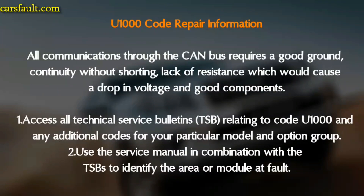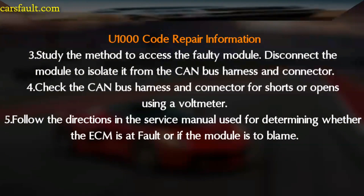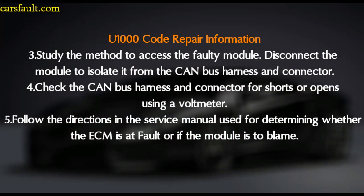Third, study the method to access the faulty module, disconnect the module associated from the CAN bus harness and connector. Fourth, check the CAN bus harness and connector for shorts or opens using a voltmeter — you can buy a voltmeter from Amazon, link in the description. The last step is to follow the directions in the service manual to determine whether the ECM is at fault or if another module is to blame.